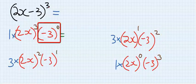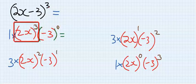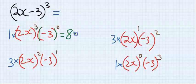Anything to the power of 0 is 1. 2 to the power of 3 gives 8. So here we have 8x³.